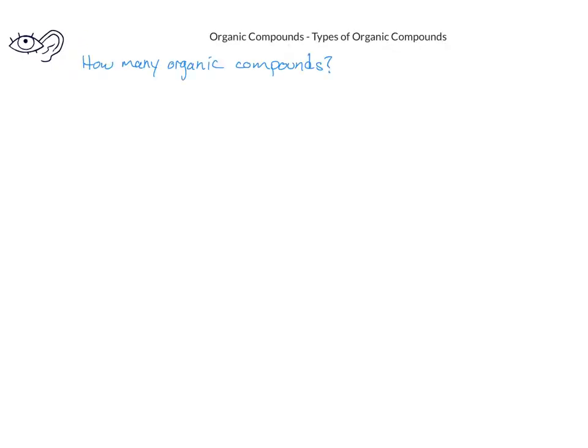How many organic compounds do you think exist? Current estimates say that there are over 10 million known organic compounds. Fortunately, we're not going to be studying all 10 million in this course. Because there are so many different organic compounds, chemists have found ways to make the study of organic chemistry much easier.